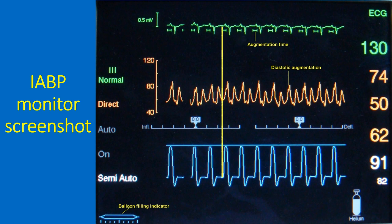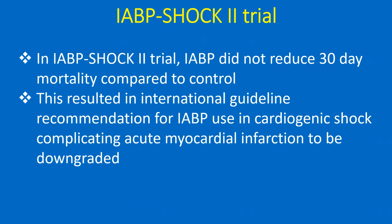The augmentation ratio can be reduced while weaning off, such as augmenting alternate cycles or less. In the IABP SHOCK 2 trial, IABP did not reduce 30-day mortality compared to control, resulting in international guideline recommendations for IABP use in cardiogenic shock complicating acute myocardial infarction being downgraded.